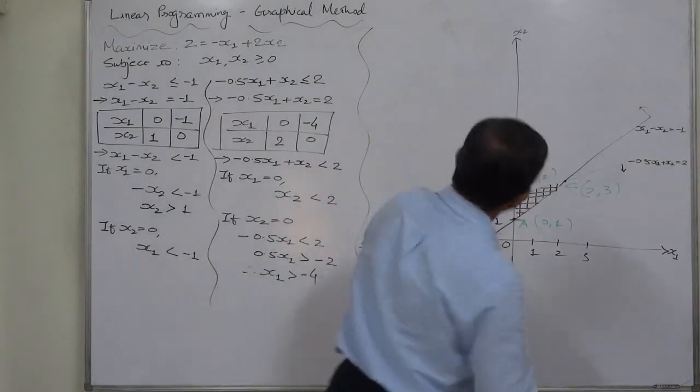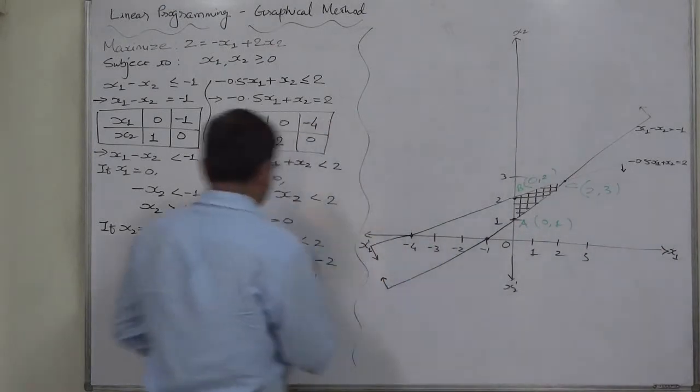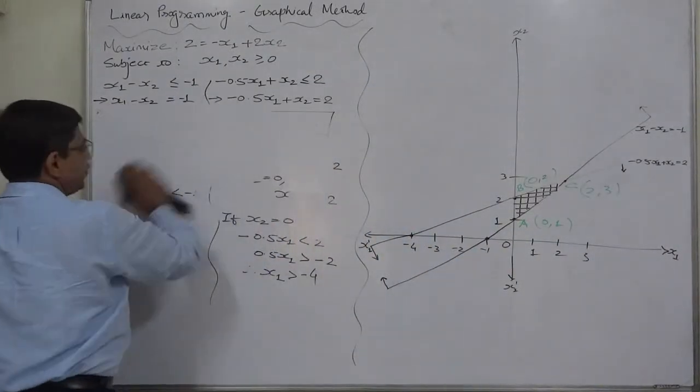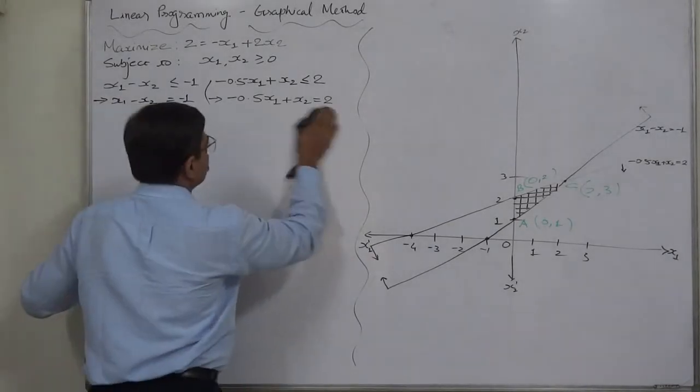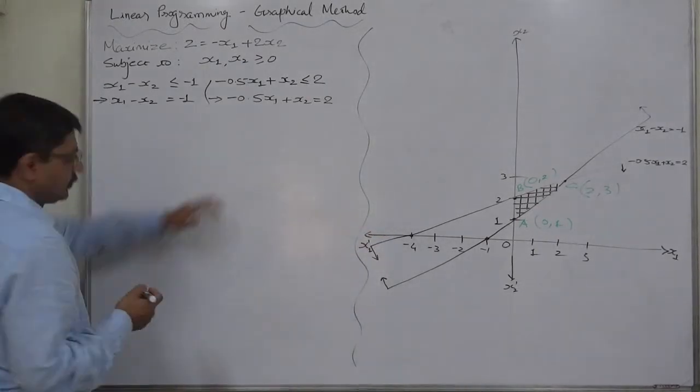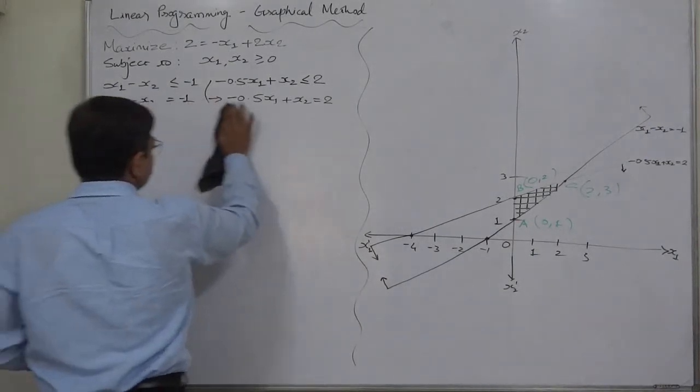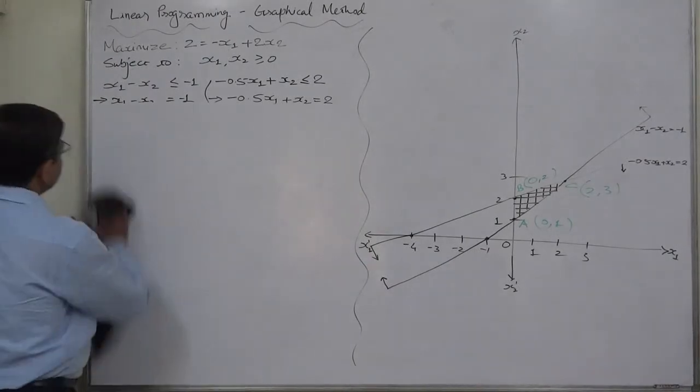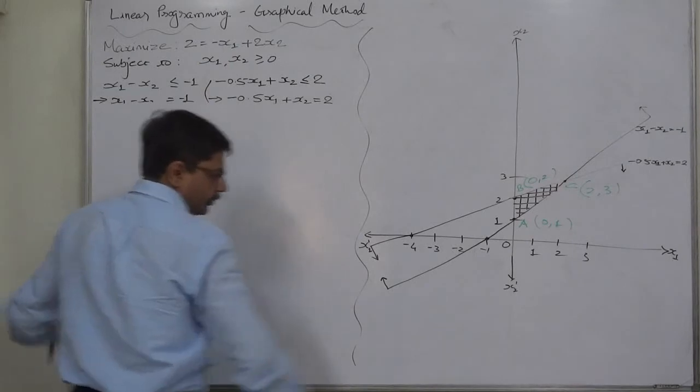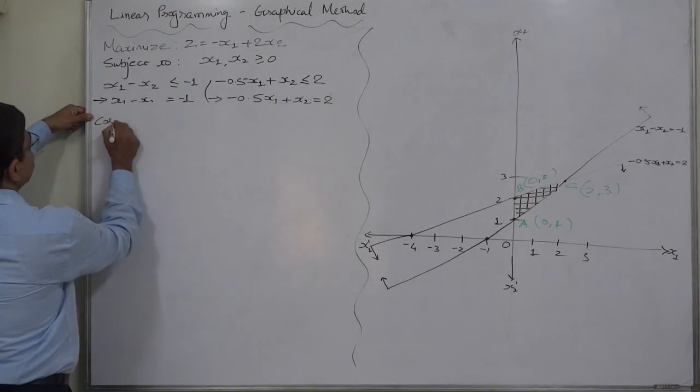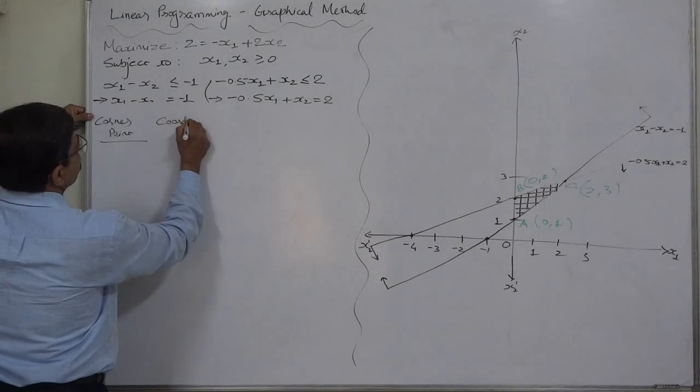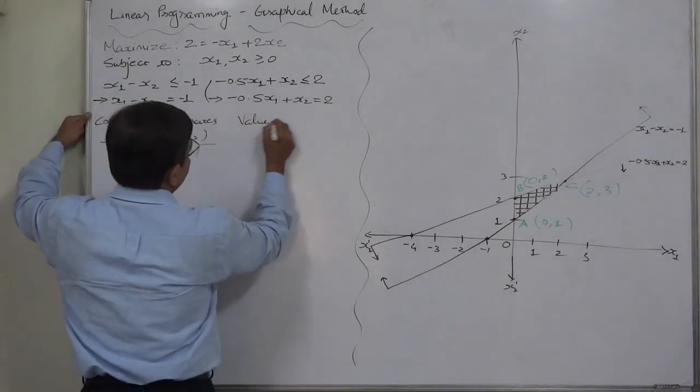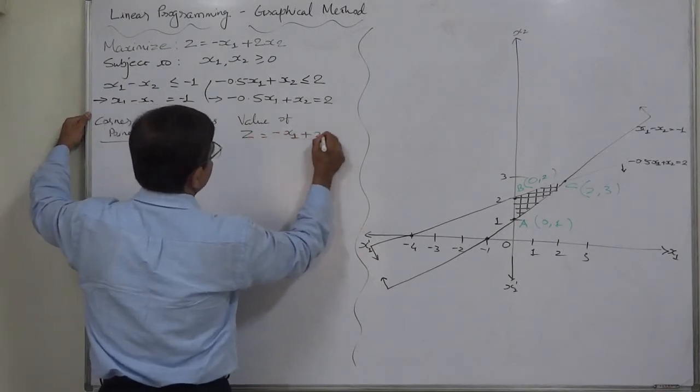Now let's check what happens with the objective function. Only three corner points, it will be quite easier. I prefer to use the easiest possible terminology every time. So I use normal terms like corner point, coordinates, instead of using the jargon. Corner point coordinates means values of x1 and x2 on the particular corner point, and value of objective function, that is z equals to minus x1 plus 2x2.